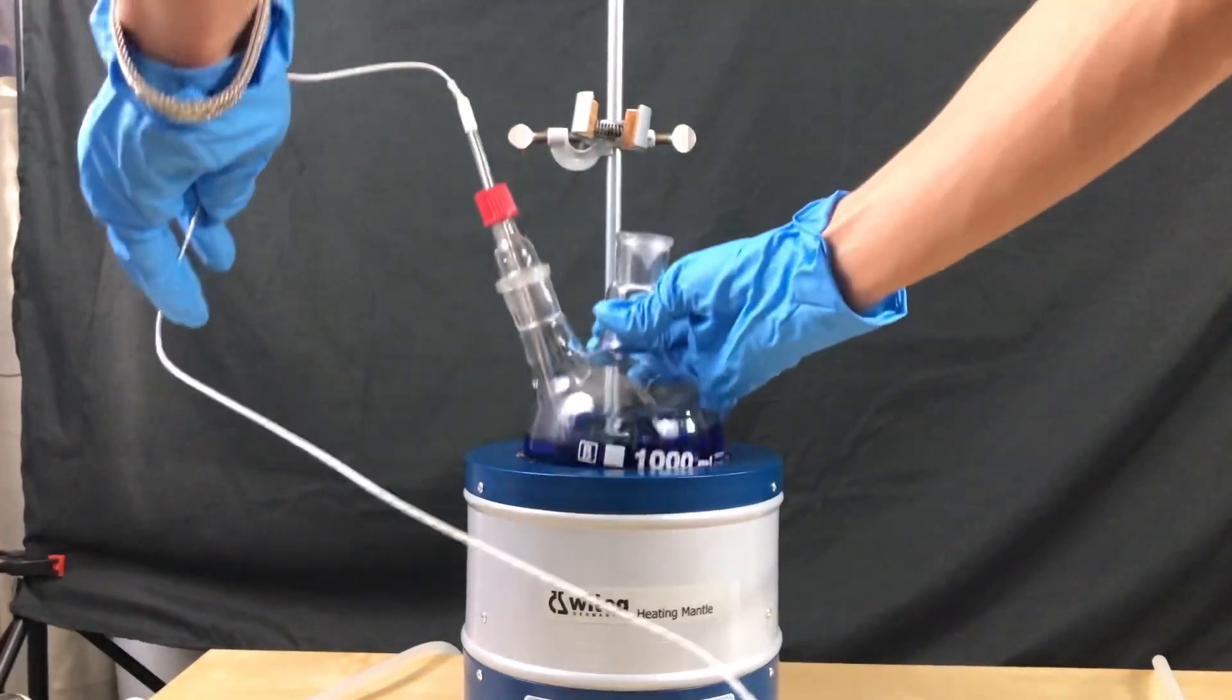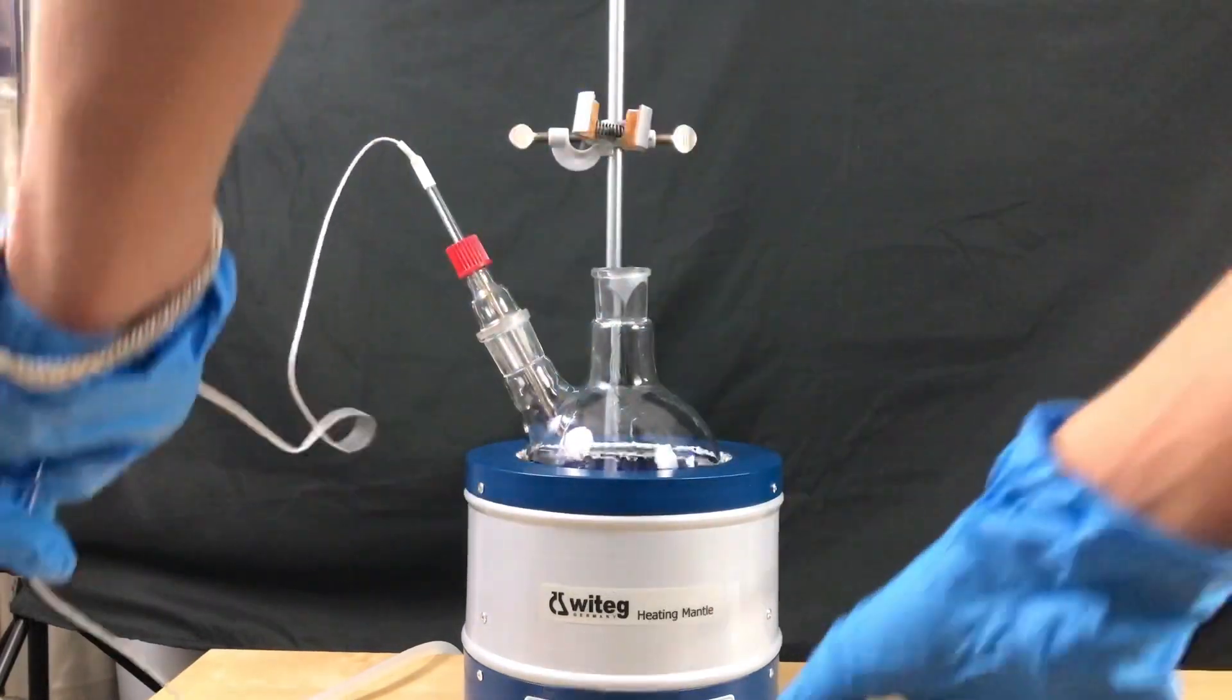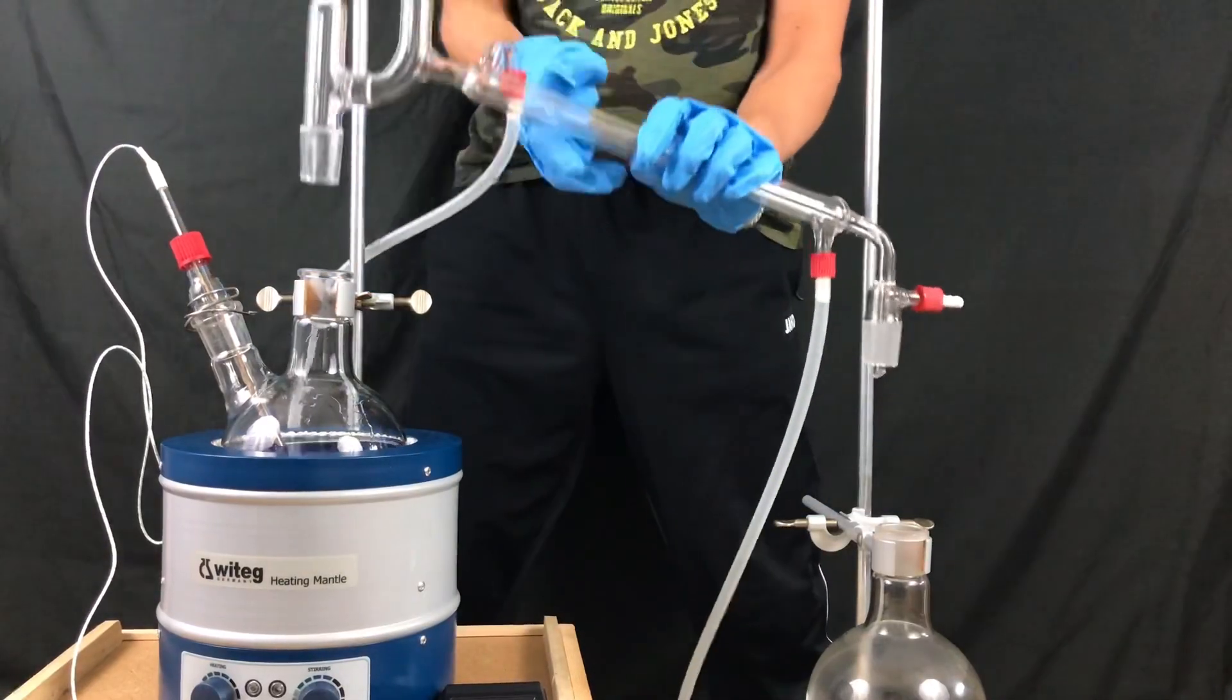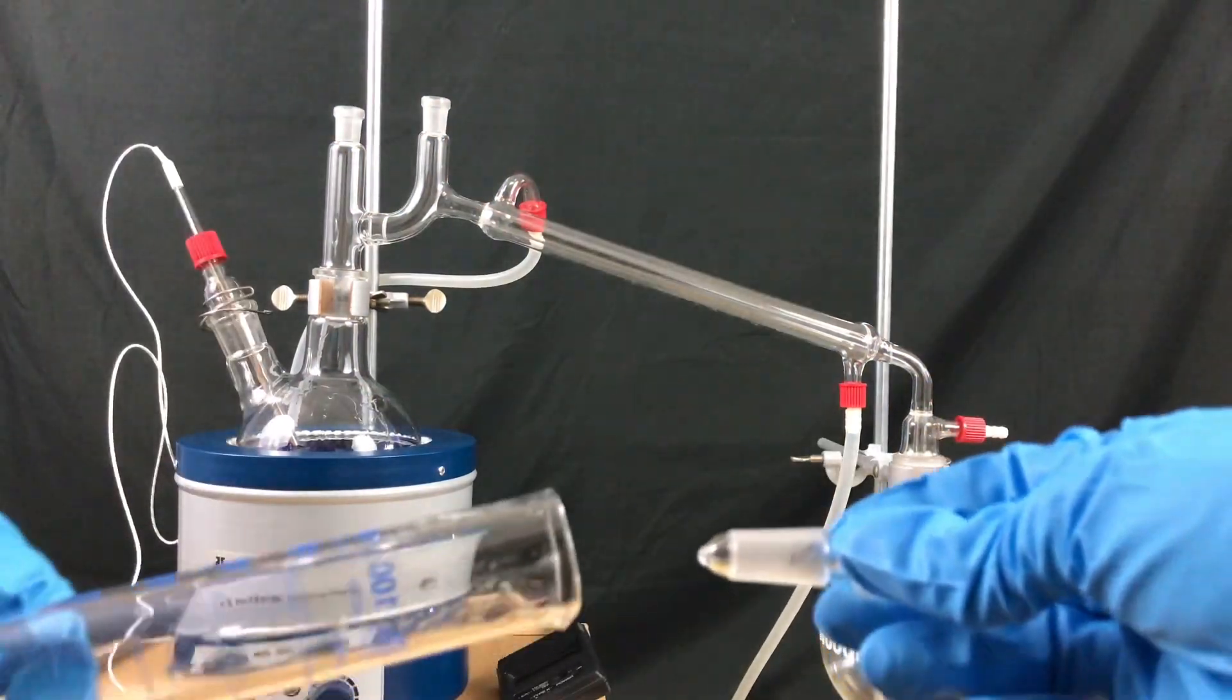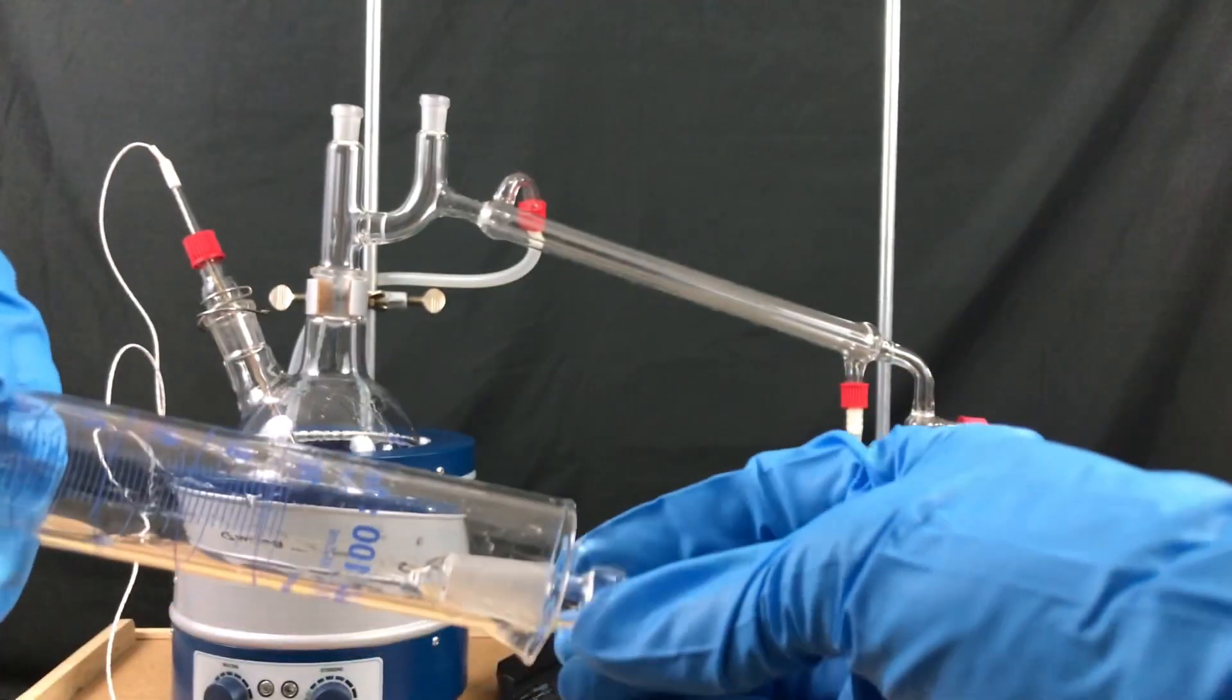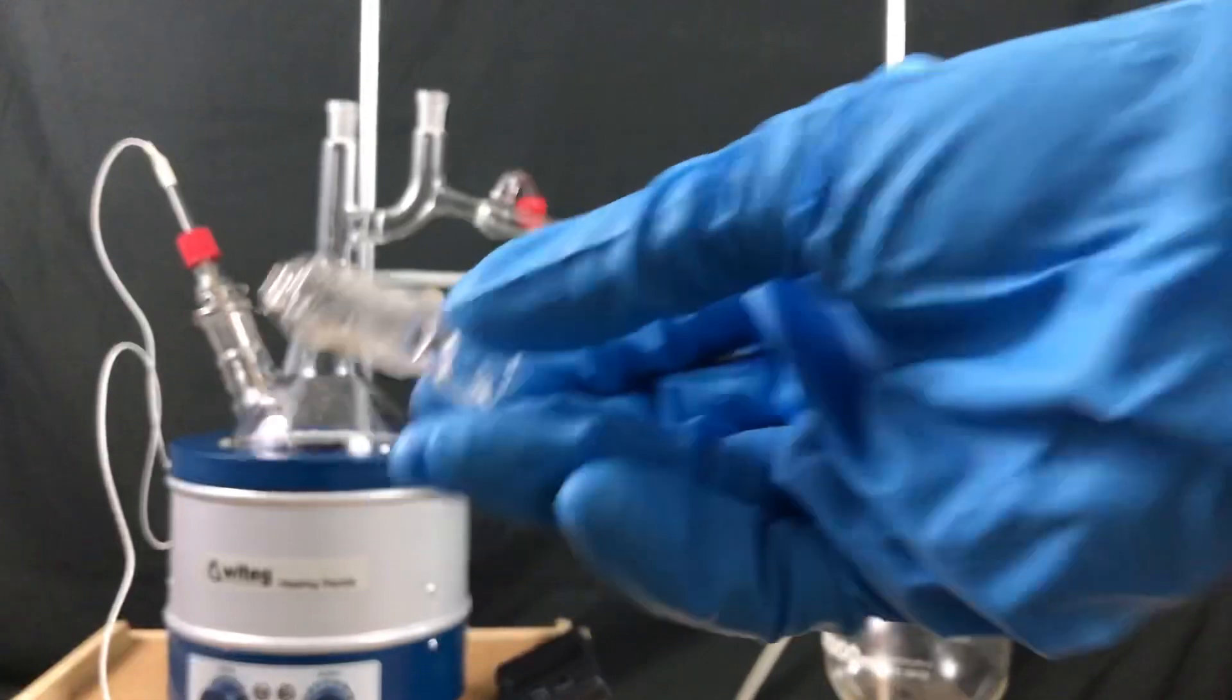Then the flask was put into a heating mantle with an integrated magnetic stirrer. I didn't show it in the video but a magnetic stirrer bar was added beforehand. A distillation bridge was put into place. I covered the ground glass plugs in sulfuric acid to make sure that no dioxane vapor escapes from our apparatus.